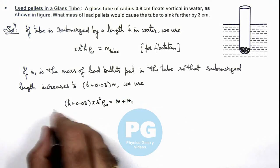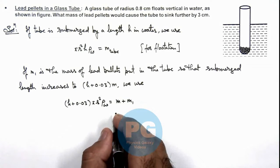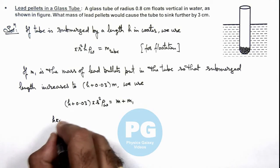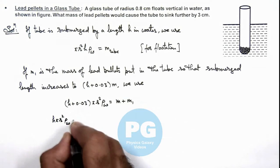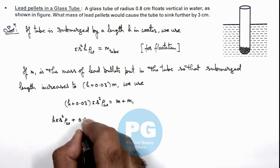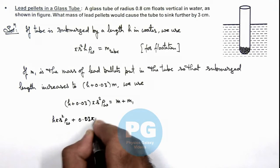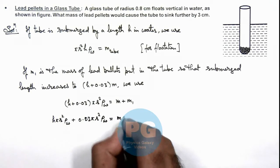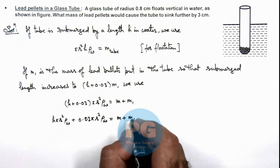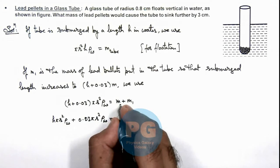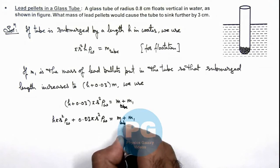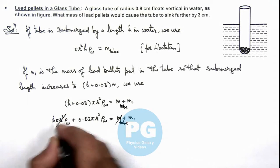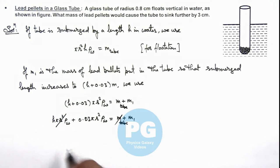Now if we open the equation, this is hπr²ρw equals m plus m₁. Here, this m is the mass of tube, and this mass of tube will get cancelled out with this term as we already written the floatation equation.